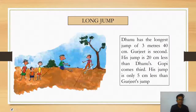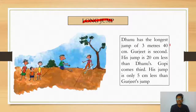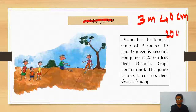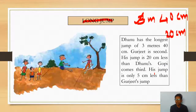Long jump: Dhanush has the longest jump of 3 metres 40 centimetres. Gurjit is second — his jump is 20 centimetres less than Dhanush's. Gopi comes third — his jump is only 5 centimetres less than Gurjit's.